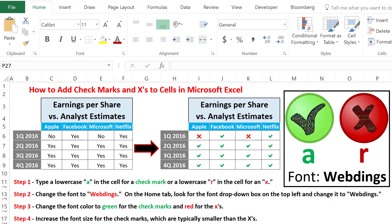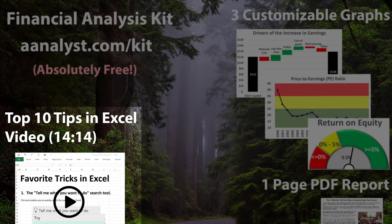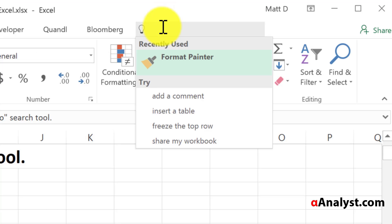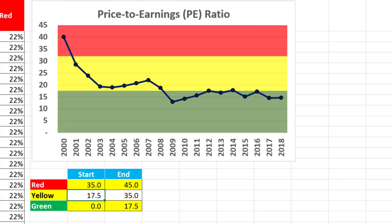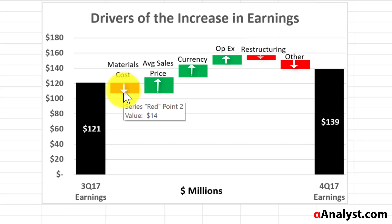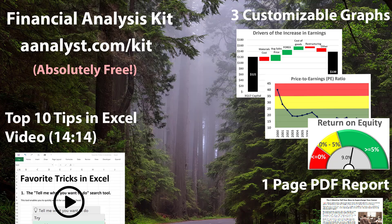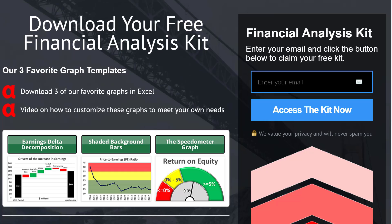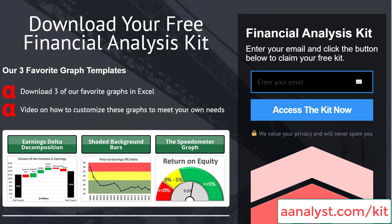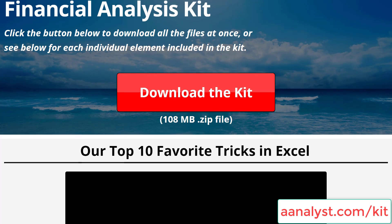So now you know how to add checkmarks and X's to cells in Microsoft Excel. If you like this video, I think you would love the financial analysis kit. It contains a video going over our top 10 favorite tricks in Microsoft Excel, three downloadable graphs in Excel with videos on how to customize them, and a report on the one word you can tell your boss to supercharge your career. Just go to aanalyst.com/kit, type in your email address, and access the kit today.